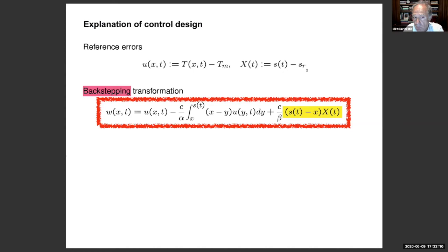And the key step is the backstepping transformation shown here. You see here that what is being transformed is the temperature error state. There is a Volterra transformation here of U. U is being transformed using a Volterra integral on itself. And in addition, there is a term related to the interface. So you see that this is capital X is S minus SR. So this term here is a quadratic term in the interface position.